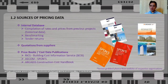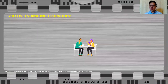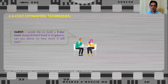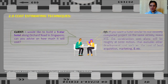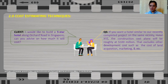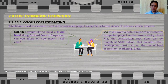Now that we know what is needed to carry out a cost estimate and where to find a source for your pricing data, let us talk about the techniques used in cost estimating. Let's take a look at this meeting between the client and the quantity surveyor. Here, the client informed the QS that he intended to build a hotel along Orchard Road in Singapore and is asking the QS how much it will cost. With this limited information, the QS responded that if you wanted a hotel similar to a recently completed project in the same vicinity, the construction cost alone will roughly be at $100 million. That excludes other development costs such as the cost of land acquisition, marketing, and so on. With the limited information, the quantity surveyor was able to provide a cost estimate using a technique called analogous cost estimating.